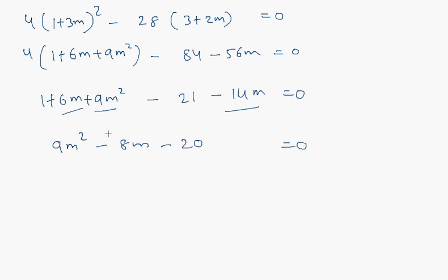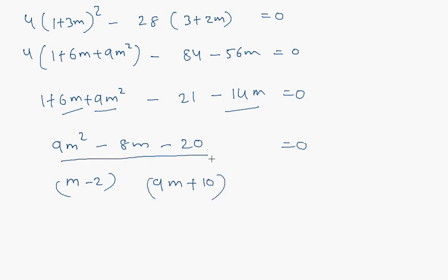Now we find the roots of this quadratic in m by factorization. After doing the algebra, the equation factors as m minus 2 times 9m plus 10 equals zero, giving m equals 2 and m equals negative 10 over 9. These are the two values of m for which the quadratic equation has real equal roots.